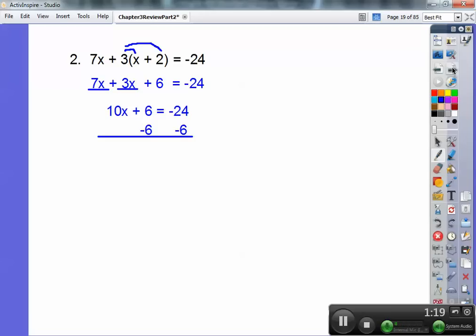We're going to subtract 6 on both sides. Be careful when you're subtracting negative 24 minus 6. Think of money. Negative 24 is like $24 in the hole and you're taking away 6 more dollars so you're going to be $30 in the hole. So that's negative 30. So 10x equals negative 30. Divide both sides by 10 and you get x equals negative 3.